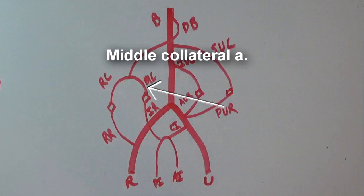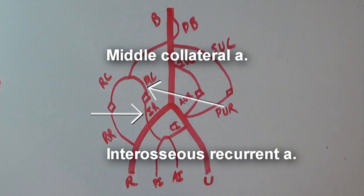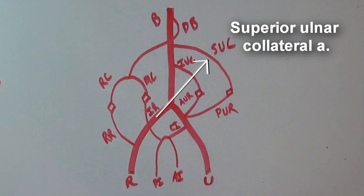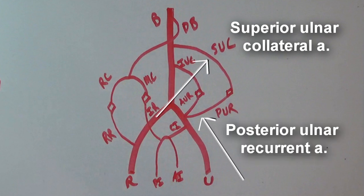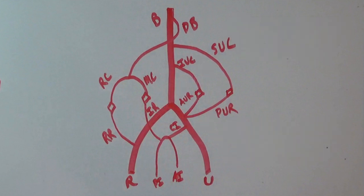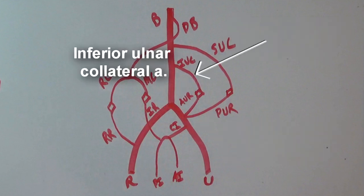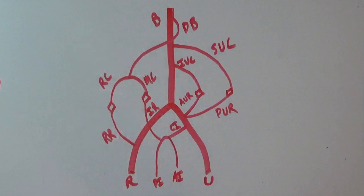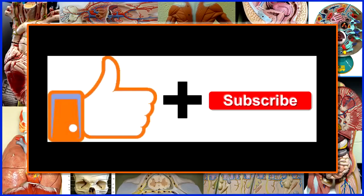To summarize the anastomoses: the radial collateral artery anastomoses with the radial recurrent artery; the middle collateral artery anastomoses with the interosseous recurrent artery behind the elbow; the superior ulnar collateral artery anastomoses with the posterior ulnar recurrent artery, also behind the elbow; and the inferior ulnar collateral artery anastomoses with the anterior ulnar recurrent artery.